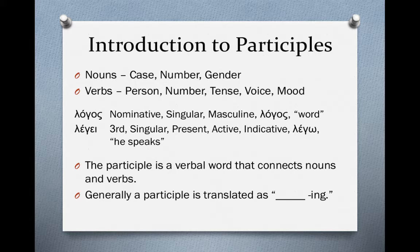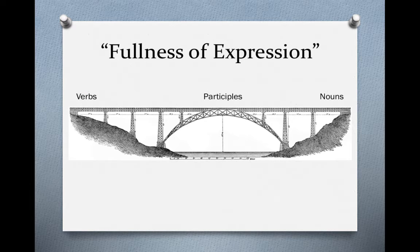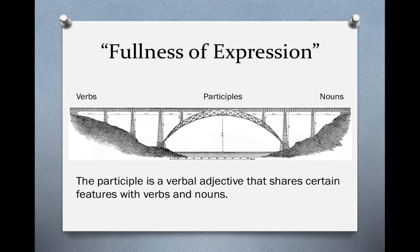Generally the participle is translated in English as the verb plus the suffix '-ing.' An analogy that helps: when someone builds a bridge, it connects two pieces of land that aren't connected, and it increases the flow of traffic so people from one end can reach the other. Participles connect verbs and nouns in order to increase what we could call the fullness of expression. The participle is a verbal adjective that shares certain features with both verbs and nouns.